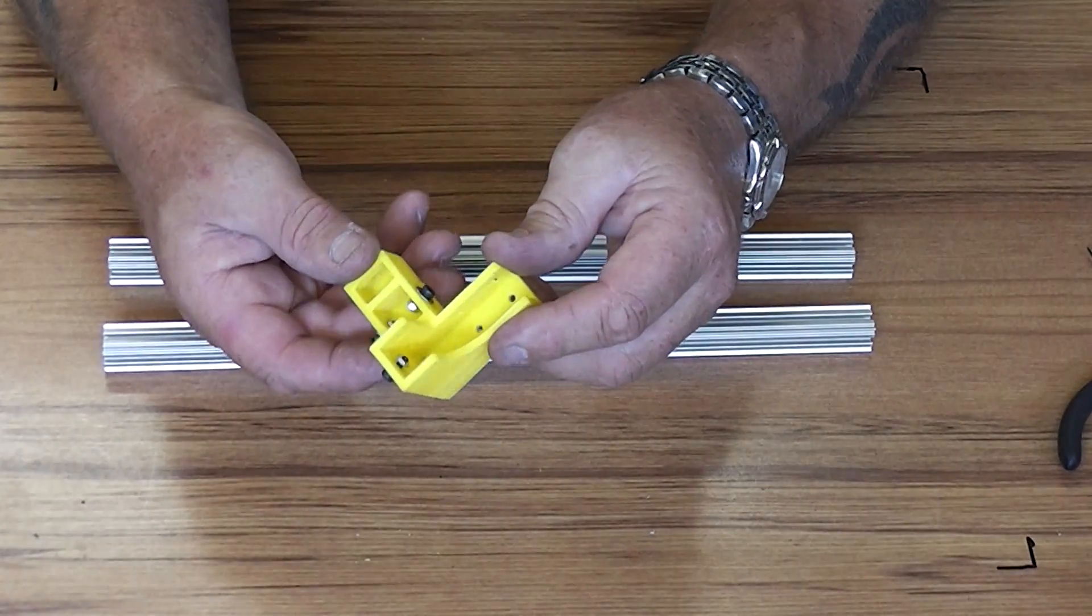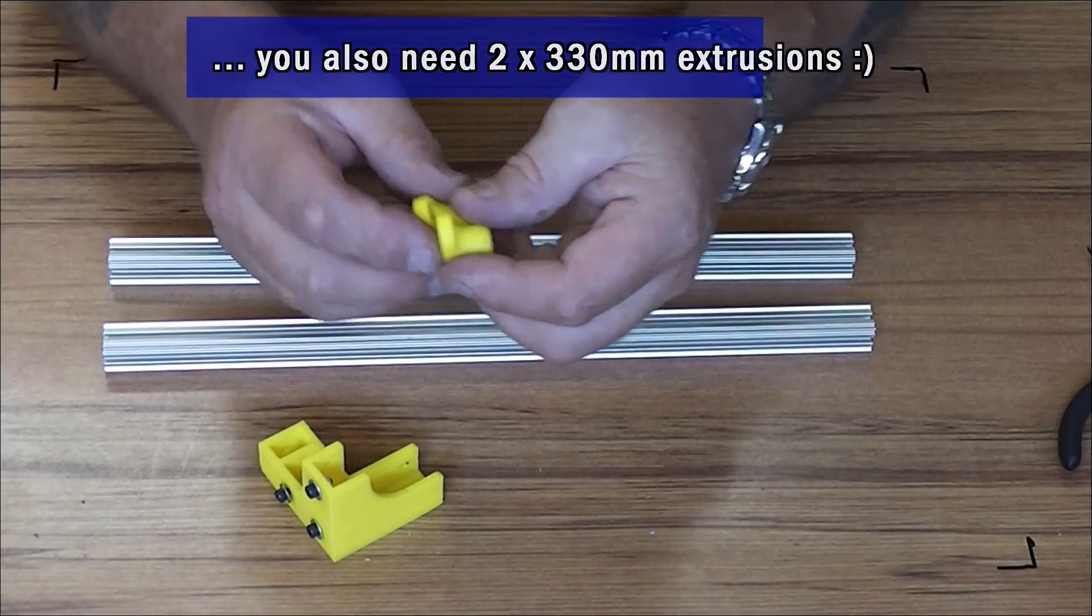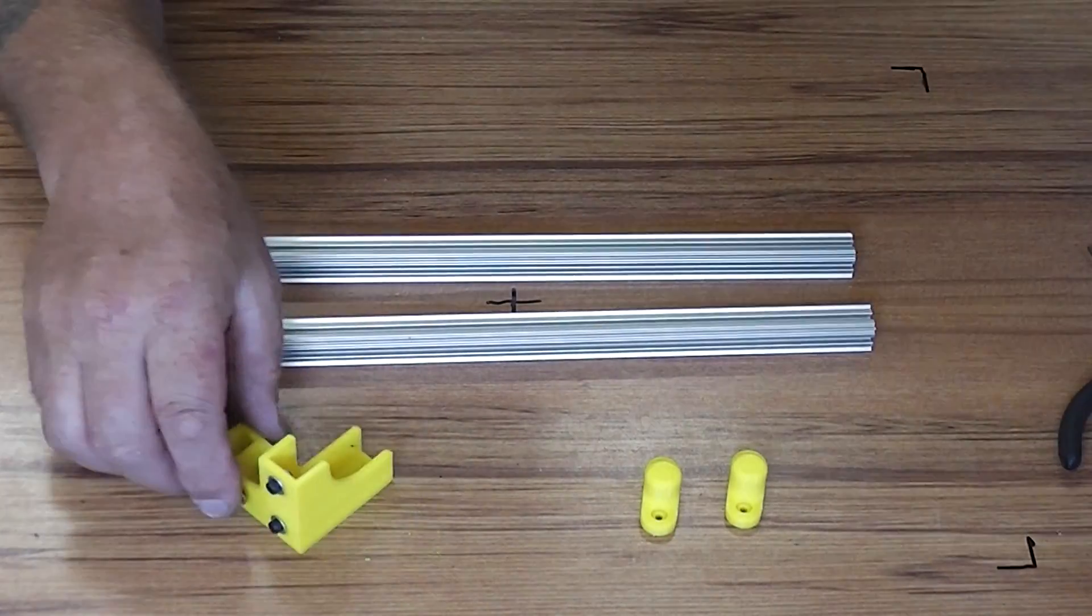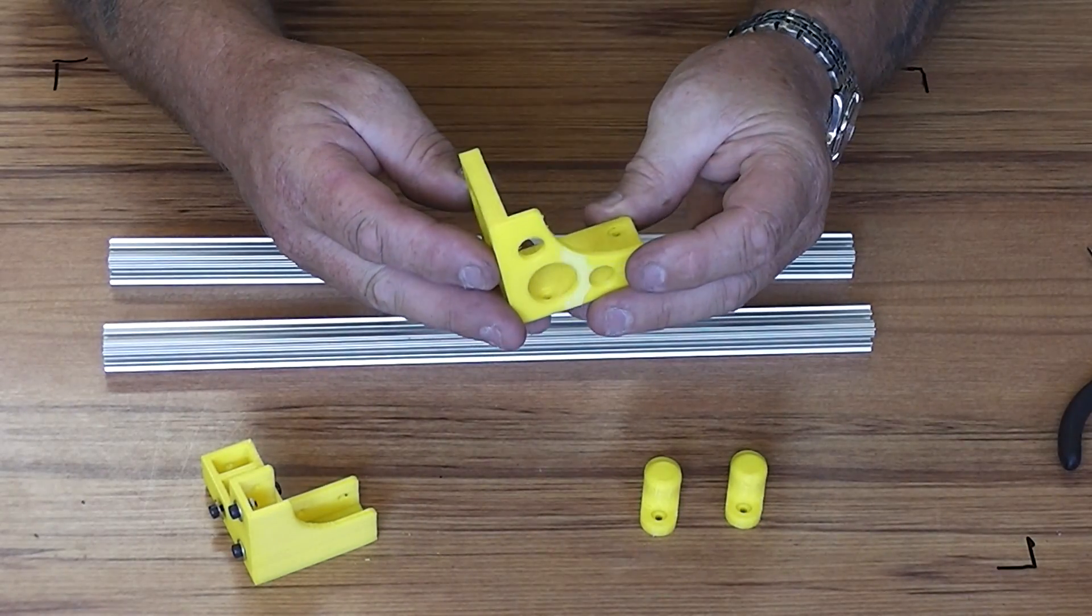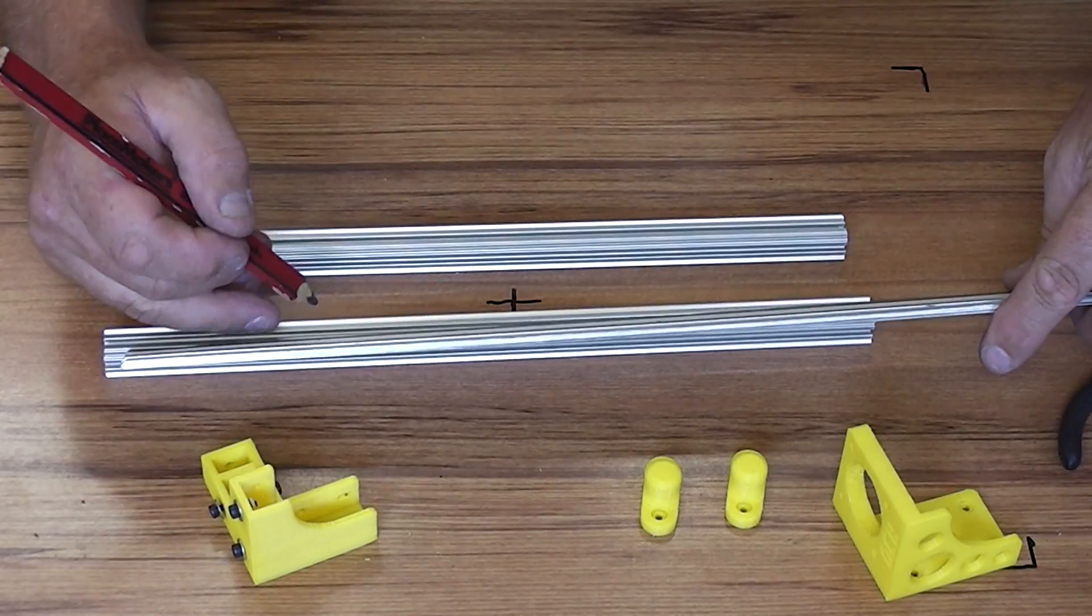You can see I've already installed all the nuts on that one. We have two bar ends for the Y carriage and we also have the motor holder for the Y carriage.